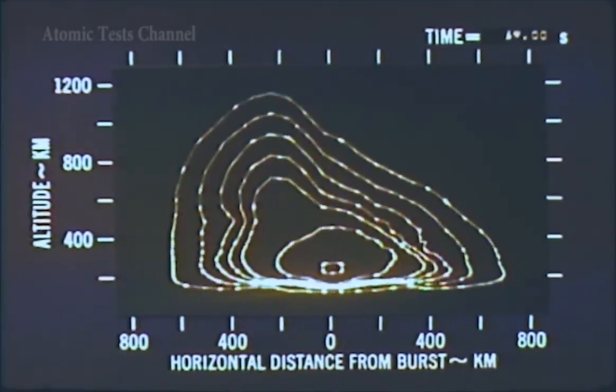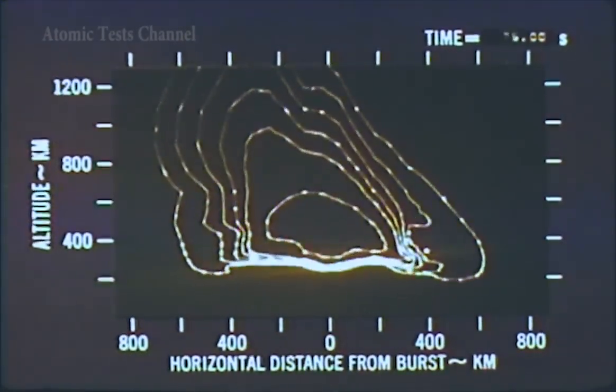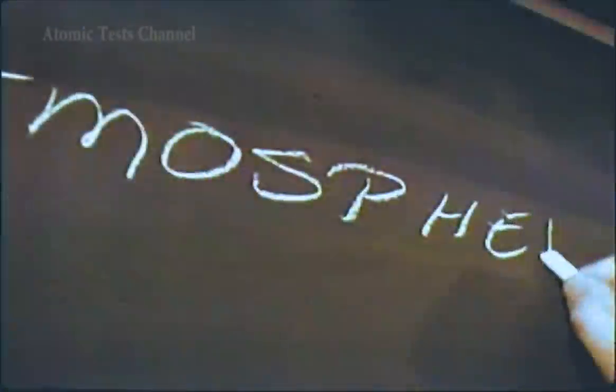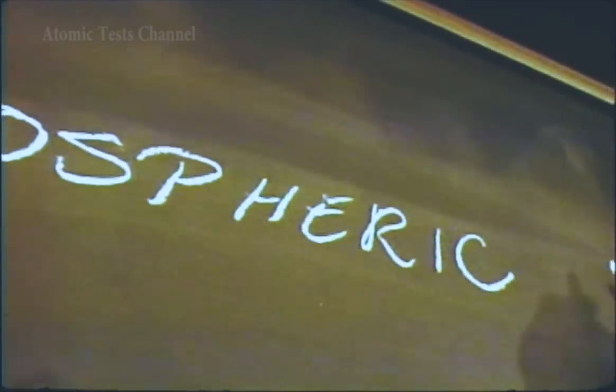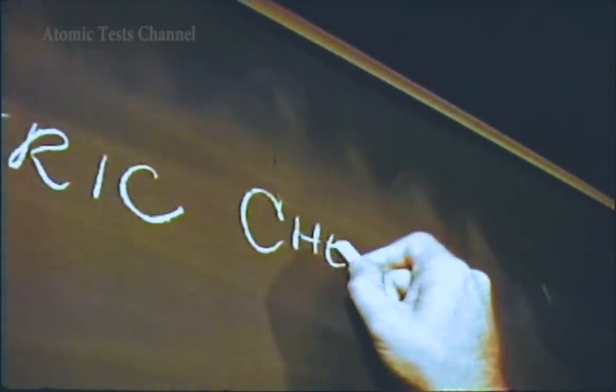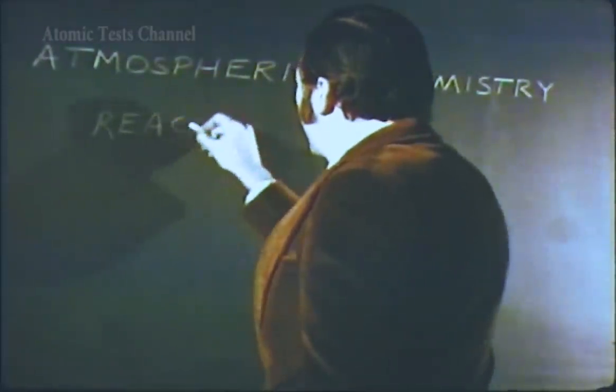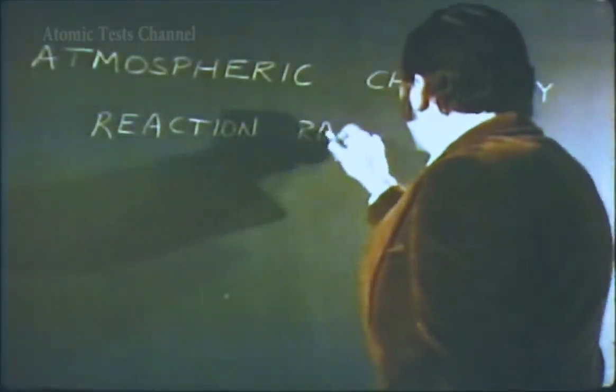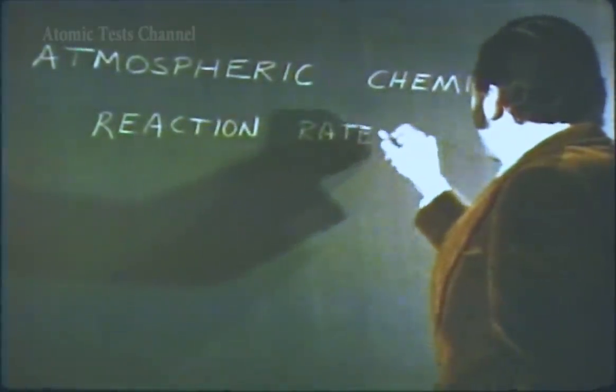The computer program that calculated the electron density shown in the first part of this film, the RANK program that computes radar performance, and computer programs used to predict communication systems performance, all have a common base: knowledge of the atmospheric chemistry. Much of our present capability in modeling the chemistry of the atmosphere has been made possible by research performed under the reaction rate program.